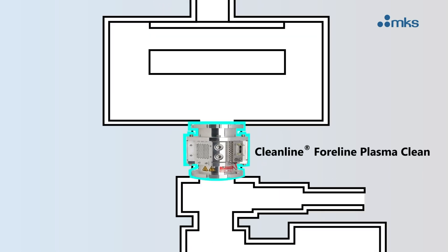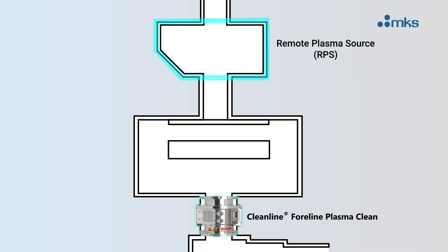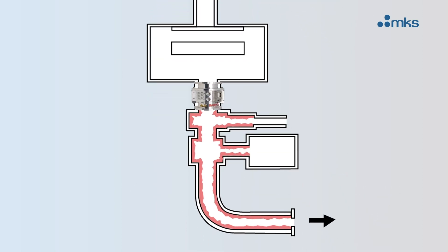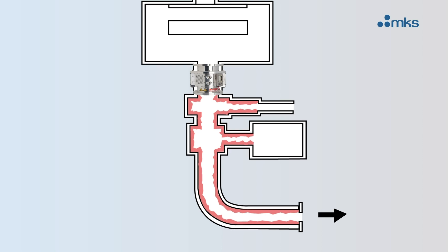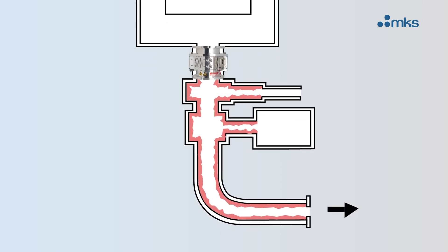The system uses the exact same chemistry as the chamber clean process. Common cleaning gases such as nitrogen trifluoride or oxygen enter the plasma source and generate atomic radicals that etch the byproduct.